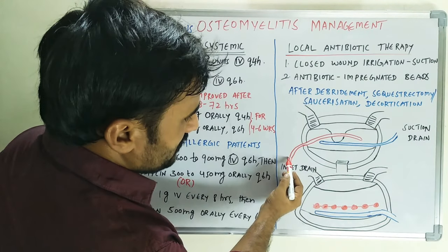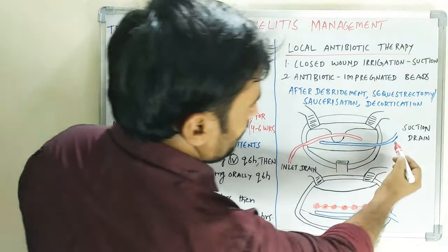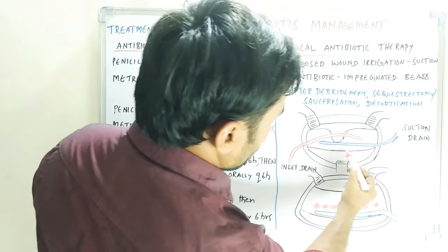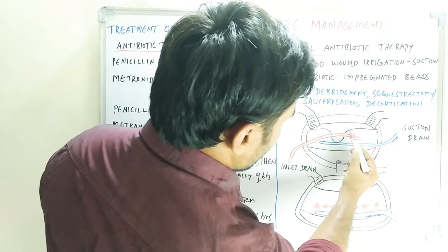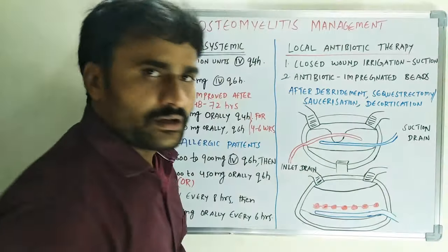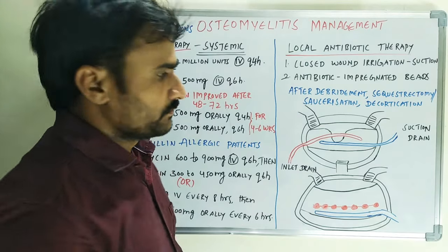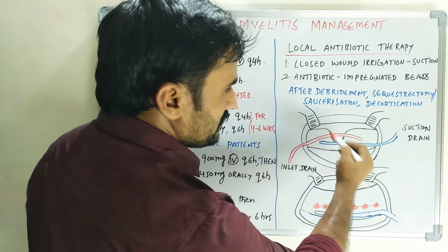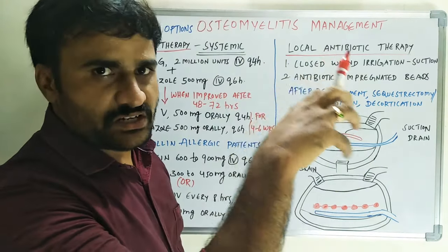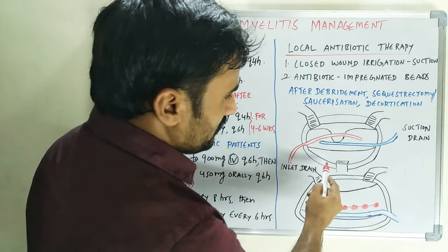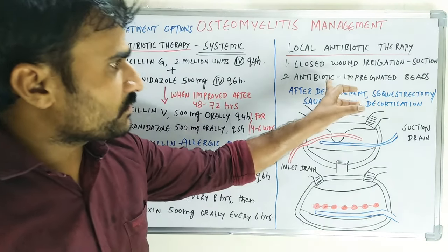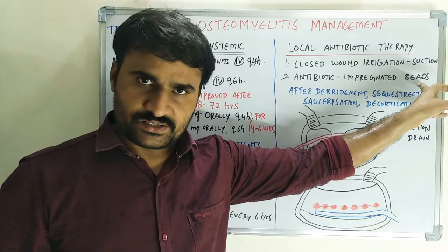In the diagram, the red drain is the inlet drain and the blue one is the suction drain. The black lines represent the bone, and the surgical area is the sequestrated region. These are the flap margins. Coming to antibiotic-impregnated beads.